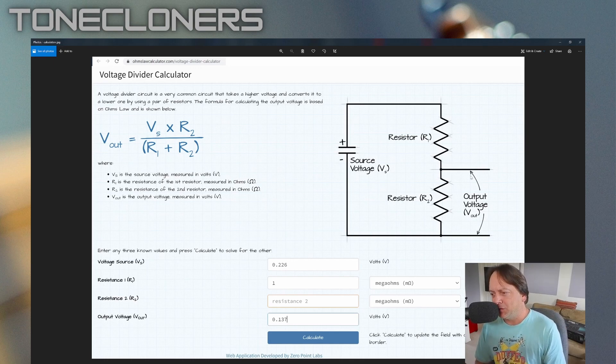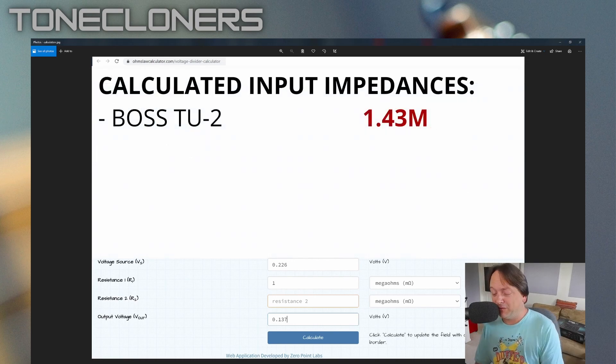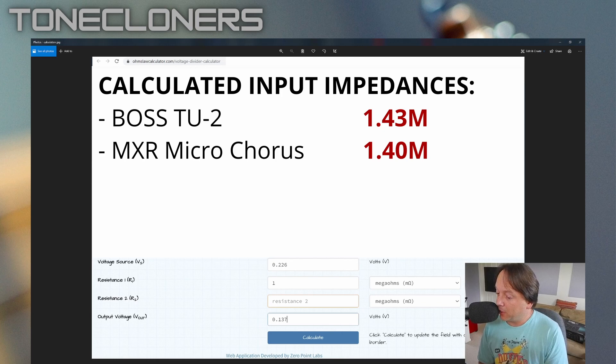Using the basic setup and tools that I had, my measurement of the impedance of the TU2 was 1.4 megaohms, which is a little bit higher than the 1 megaohm it stated. So there could be variances in my circuit or equipment. Likewise, the MXR Microchorus, 1.4 megaohms.